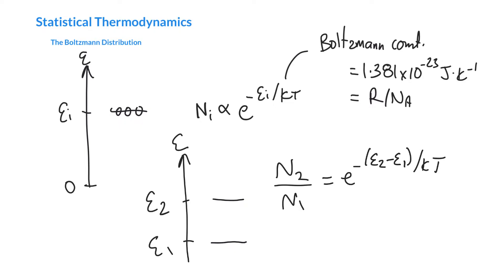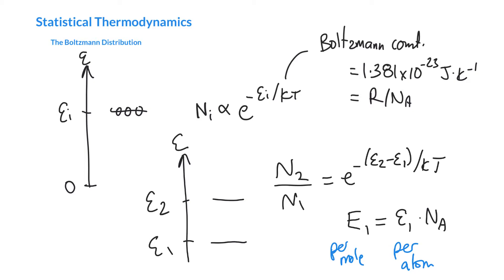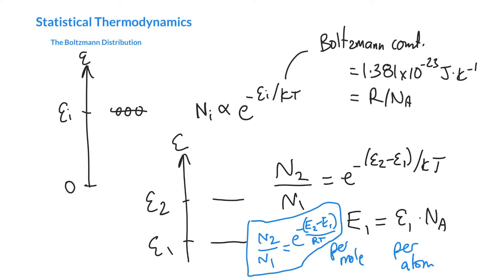We'll often look at energy per mole rather than per atom. We can convert: capital E is per mole, with units like kilojoules per mole, while lowercase e is per atom. We multiply by Avogadro's number to convert. So we can rewrite the expression: N2 over N1 equals e to the minus (E2 minus E1) in per-molar energies. Multiplying both the numerator and denominator by Avogadro's number turns the Boltzmann constant into the ideal gas constant. This gives a very famous equation, and of course E2 minus E1 is just delta E, which we've used before.